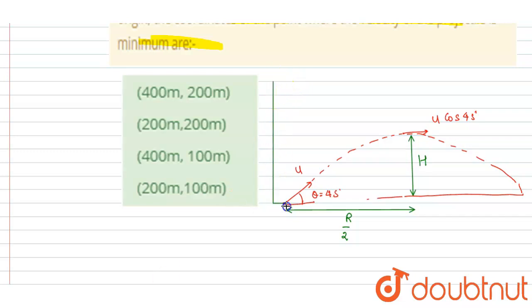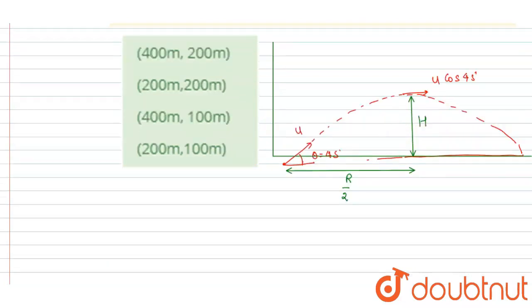Now if you see here, if I say the point of projection as the origin, then we can write down the coordinates. So x-coordinate is simply R by 2. R is given, it is 400, so it is 400 by 2, which is 200. Now let's find out the maximum height.